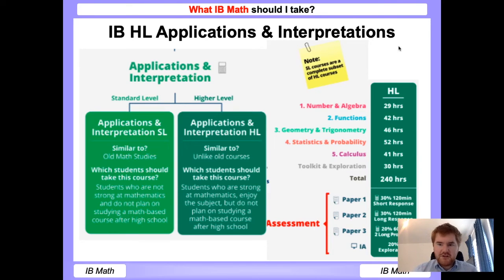On applications, paper one is always short response, paper two is always long response. Paper three is an investigation style paper, similar to the IGCSE paper six. Feel free to check out my videos on that, and of course the coursework option as well. Generally, I'd recommend this course for someone that's good at mathematics, but at the same time doesn't necessarily need mathematics in a future university option.